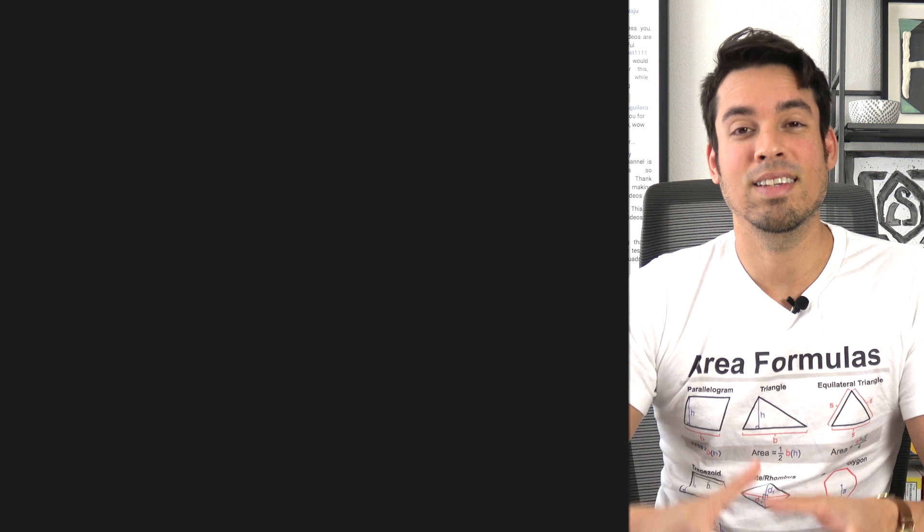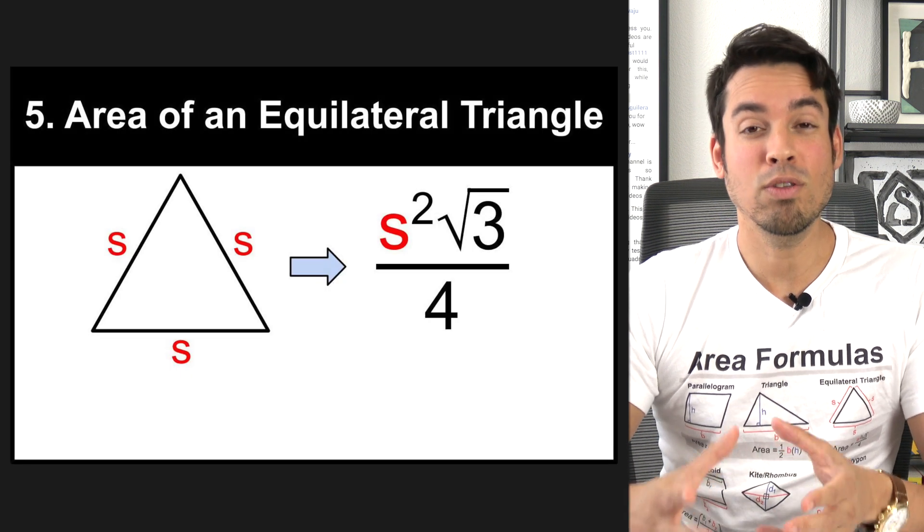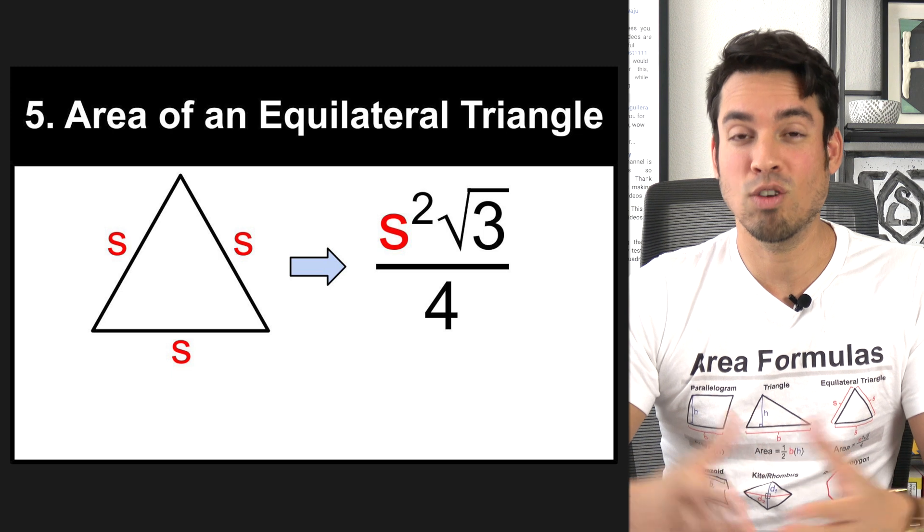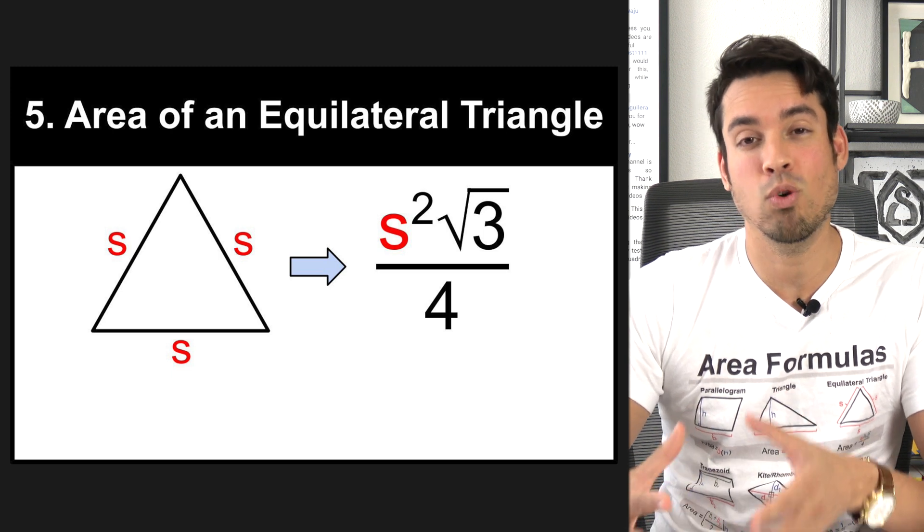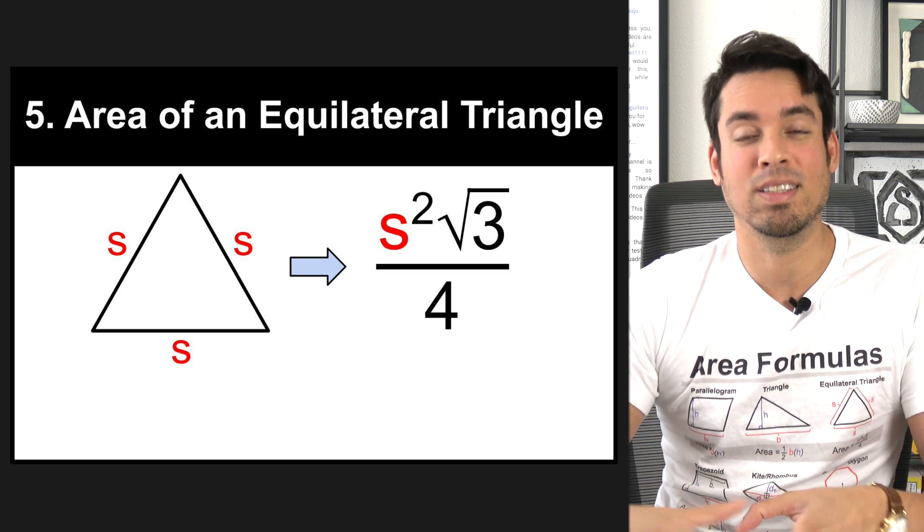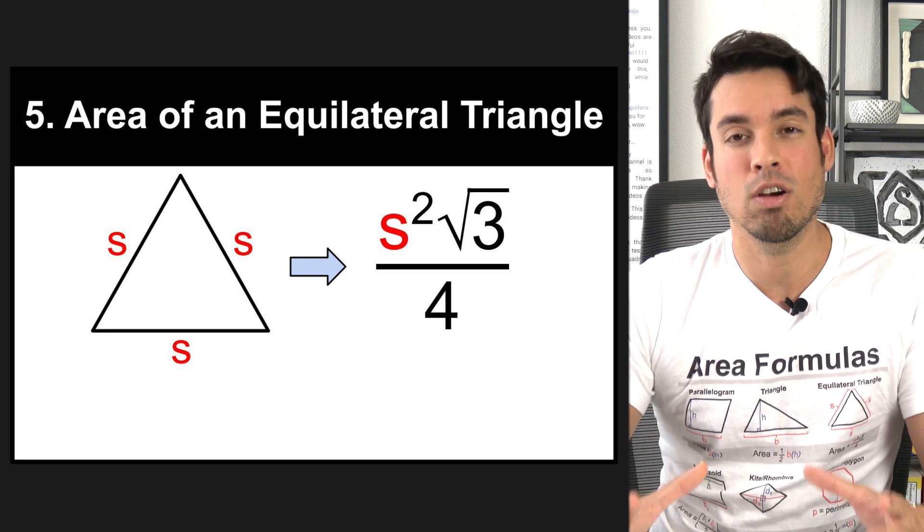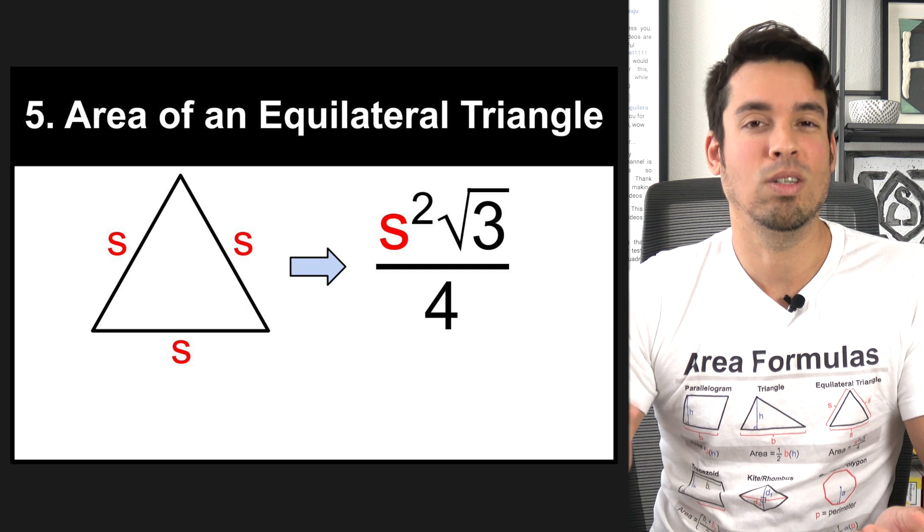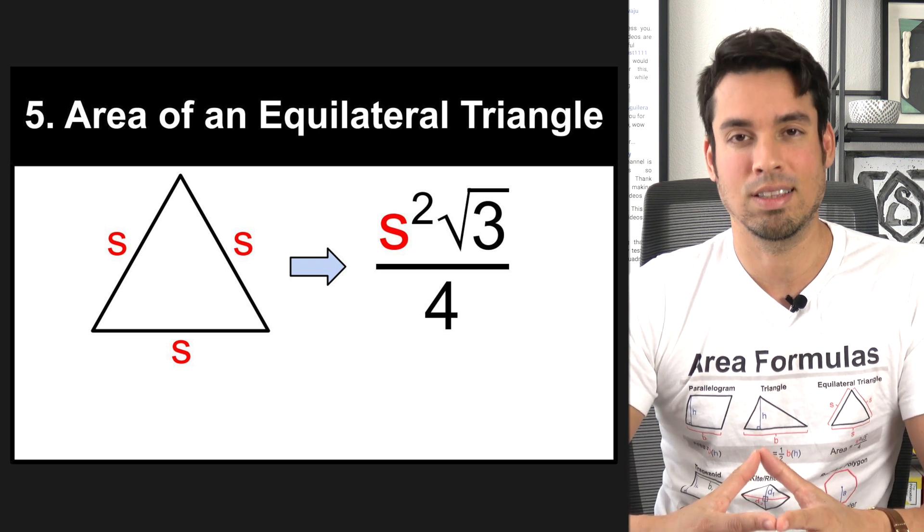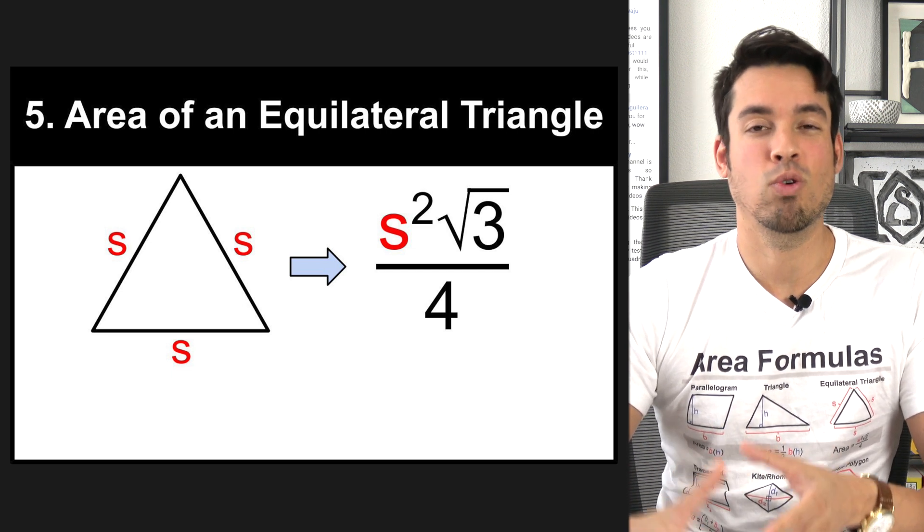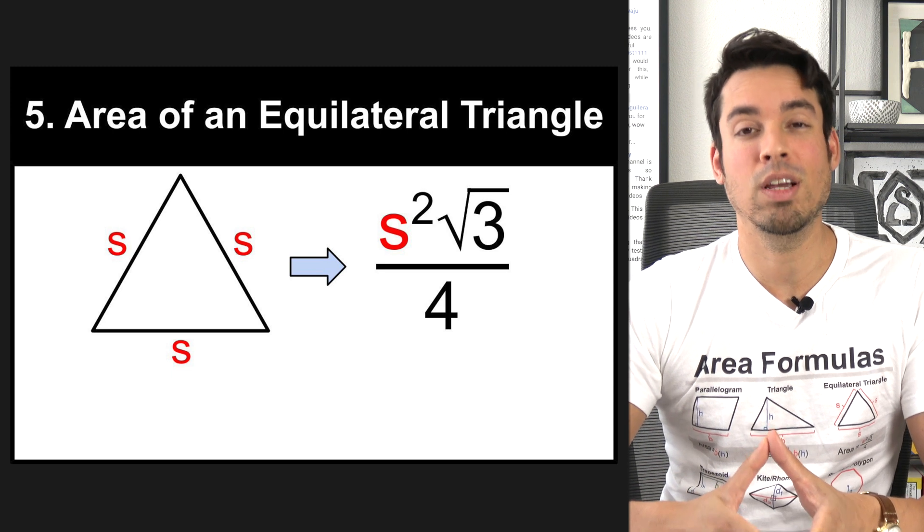Next on the list is the area of an equilateral triangle. Now, we all know the formula to calculate the area of a triangle, which is one half base times height. And of course, you're using that formula to get this formula. But in case you get an equilateral triangle and only are provided with the side lengths, you can use this as a slick shortcut to get the area. This famous formula is, of course, S squared times the square root of three over four.